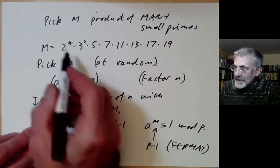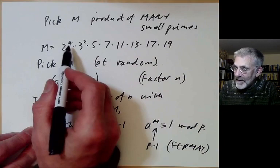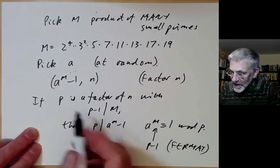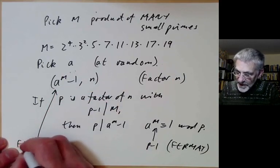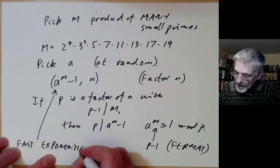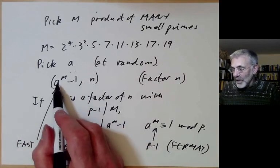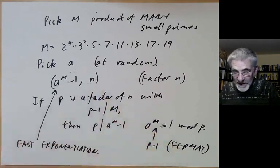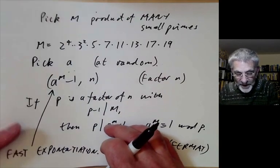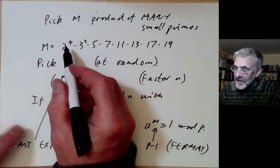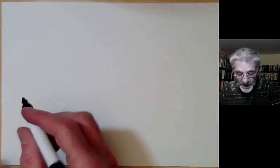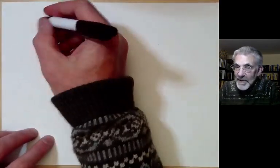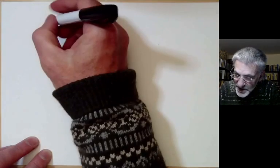If p minus 1 is a product of some of these prime powers, then we found a factor of n rather easily. And we notice that a to the m can be easily worked out using fast exponentiation. Remember, we can work out exponents modulo some number very quickly. So let's give an example of this.